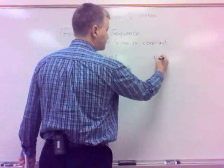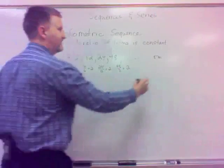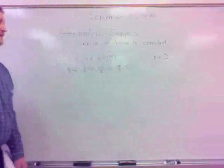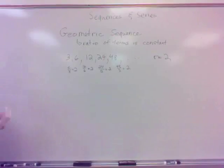So obviously the ratio is going to be important. In this case, r is 2. So that's geometric. If it has a common ratio, it's called a geometric sequence, and r is the common ratio.